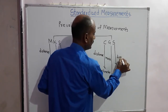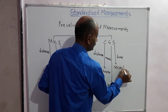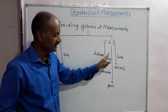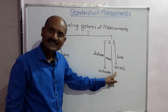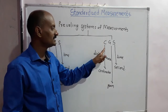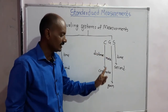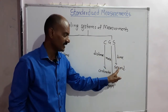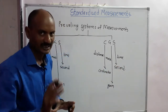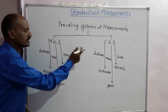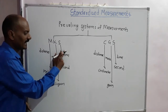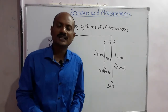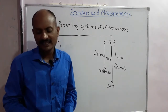In the CGS system: C stands for centimeter, G stands for gram, and S stands for second. So in the CGS system, distance is measured in centimeter, mass in gram, and time in second.